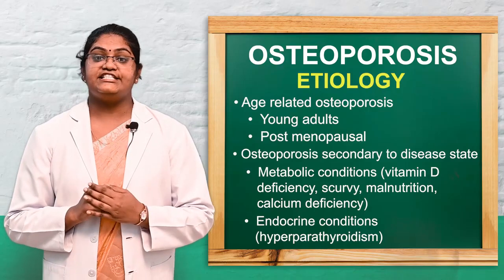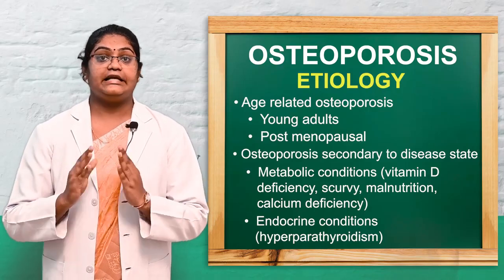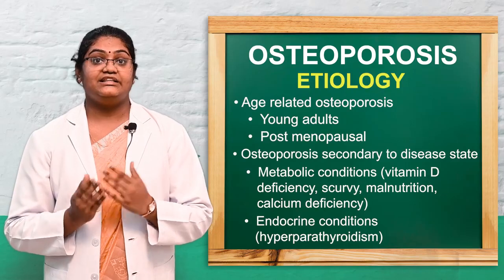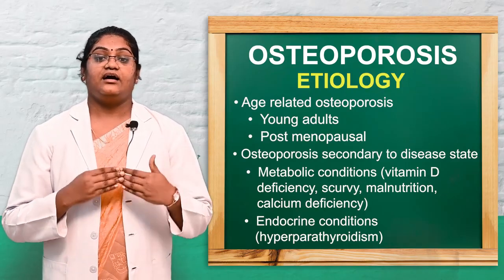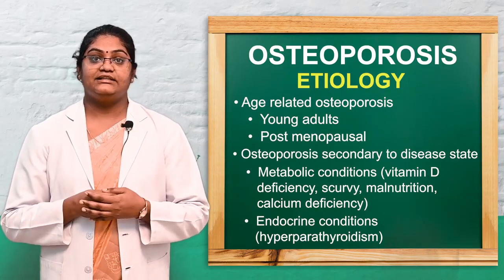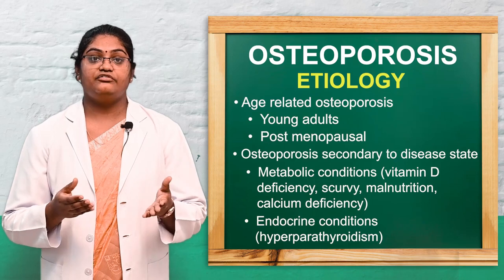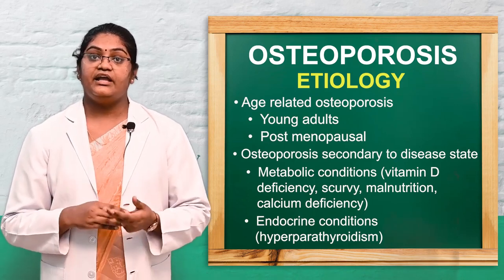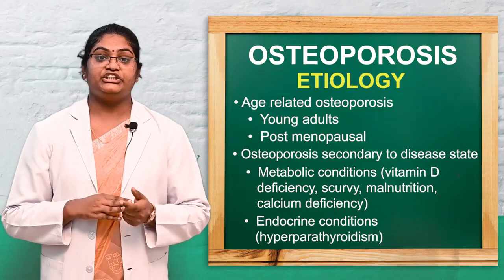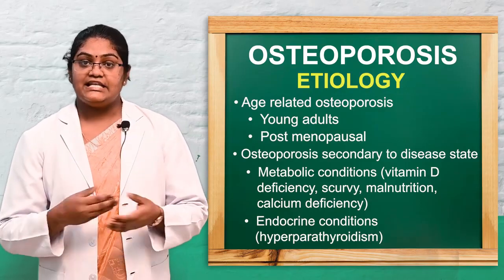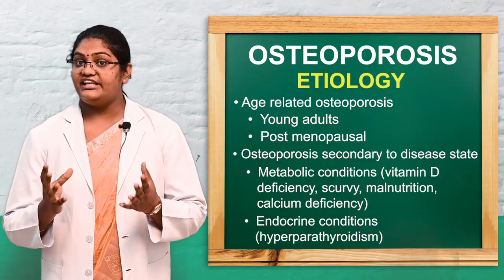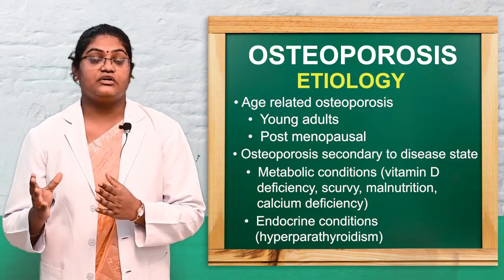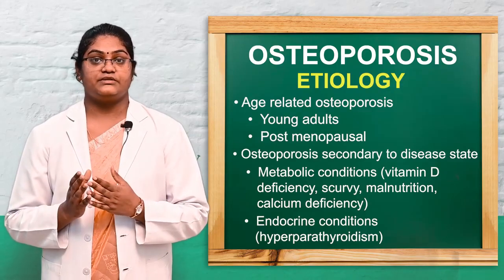The second etiology is osteoporosis related to secondary diseases, such as metabolic diseases. Examples of metabolic diseases include vitamin D deficiency, scurvy, malnutrition, and calcium deficiency. People with these conditions have a high risk of osteoporosis.